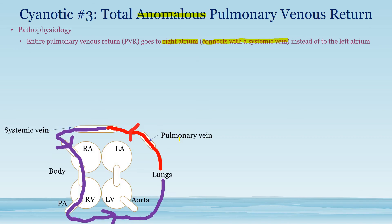As you can see here, the pulmonary veins, which should normally go to the left atrium, instead travel to a systemic vein, merge with blood there, and go back to the right atrium through the right ventricle and back to the lungs. The blood never reaches the left side of the heart, and as a result, you can't get blood to the body. This is a lethal condition unless there are additional defects.